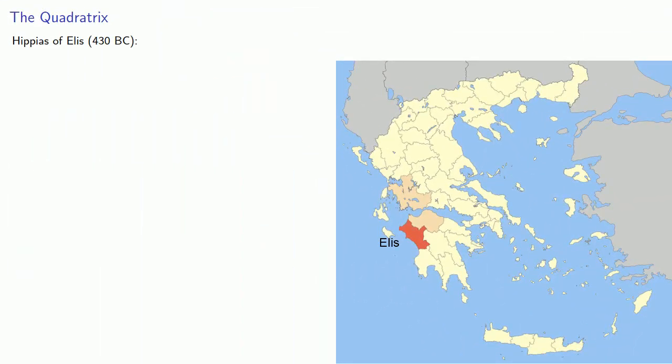Hippias belonged to a school of philosophy known as the Sophists. Generally speaking, the Sophists had a bad reputation because they taught other people for money. And it's worth pointing out that the objection was not based on the idea that knowledge should be free, but more based on the idea that unless you were independently wealthy, you had no business teaching other people how to think.